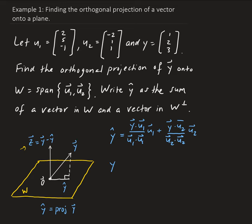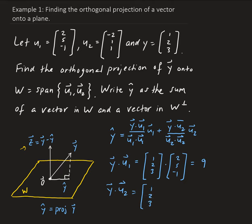Let's calculate y dotted with u1. We have [1, 2, 3] dotted with [2, 5, -1], giving us 2 plus 10 minus 3, which is 9. Now let's take y dotted with u2. We have [1, 2, 3] dotted with [-2, 1, 1], giving us -2 plus 2 plus 3, which is 3.